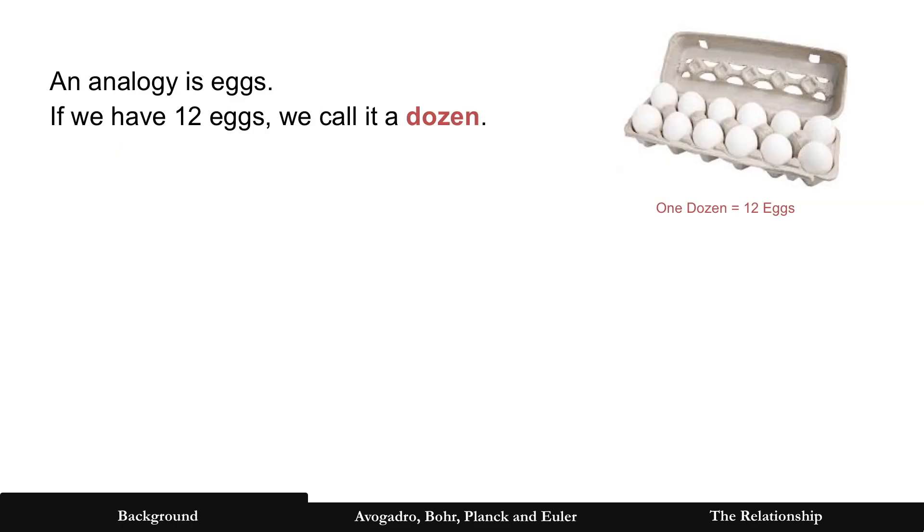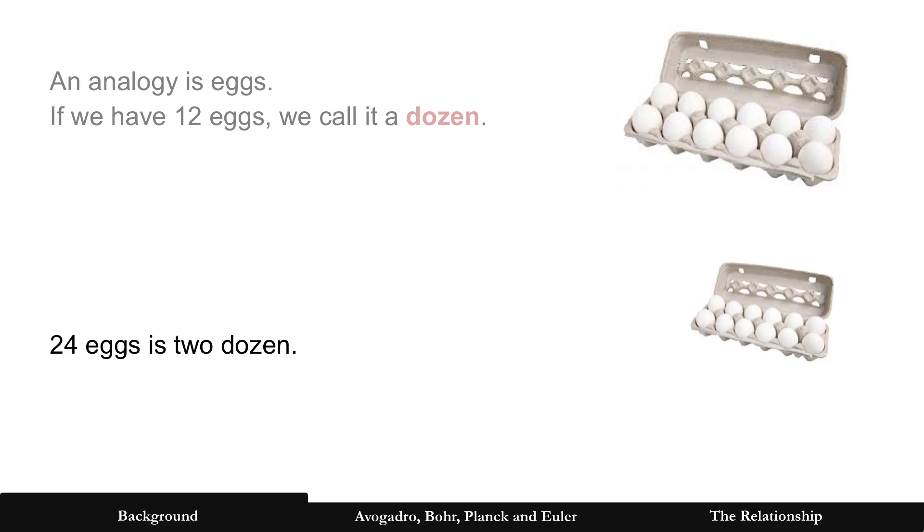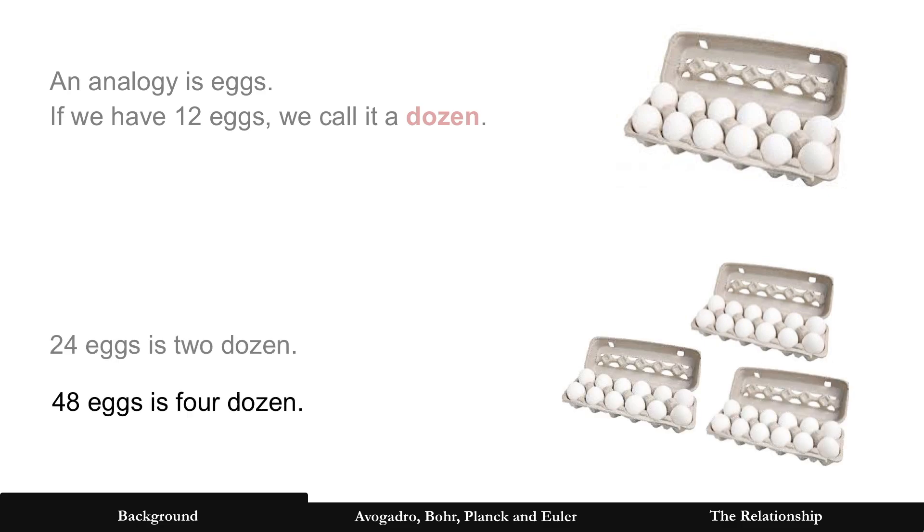And we do this for other things, right? An analogy is eggs. If we have 12 eggs, we call it a dozen. 24 is two dozen. 48 eggs is four dozen.